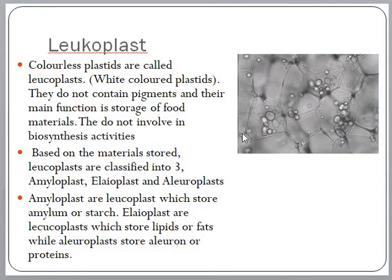The second group is called leucoplasts. Leucoplasts are plastids meant for storage. They are colorless and not pigmented. They store food material and do not involve in biosynthesis activities. Based on the compound stored within leucoplasts, they are classified into amyloplasts, lioplasts, and alluroplasts. Amyloplasts are starch or carbohydrate storing plastids. Lioplasts are fat or lipid storing plastids. Alluroplasts or proteoplasts are protein storing plastids.